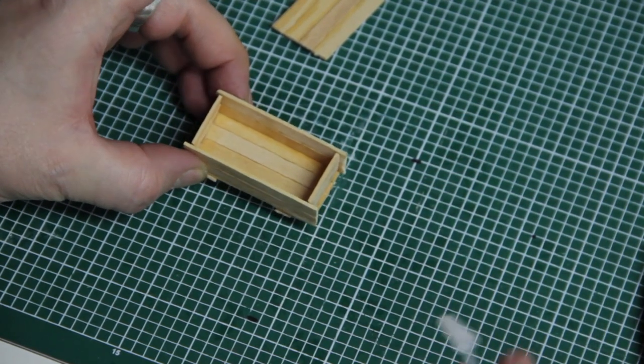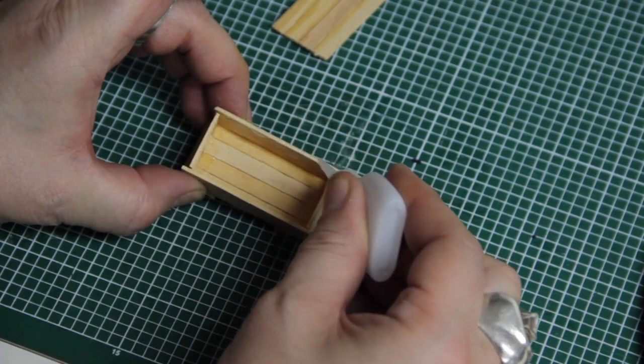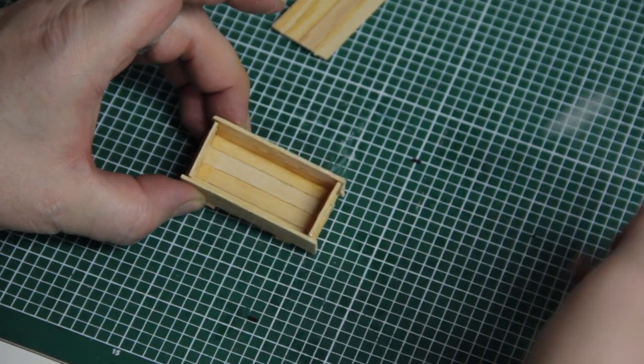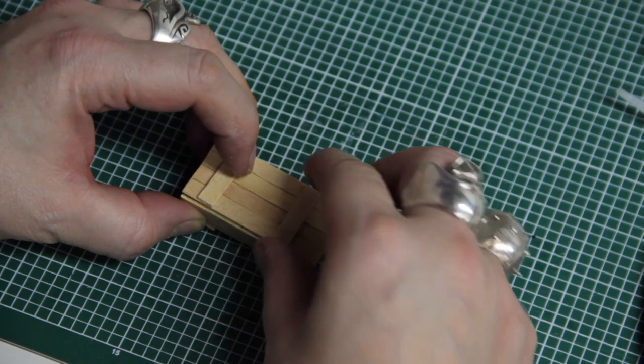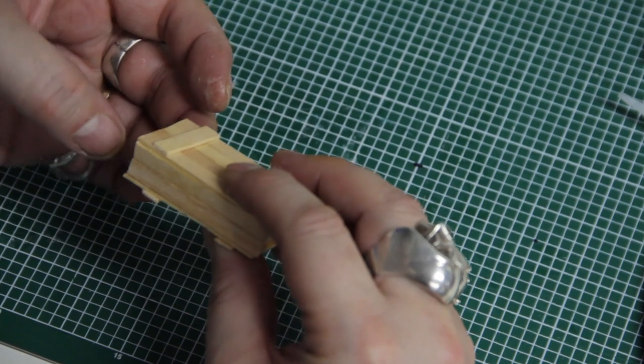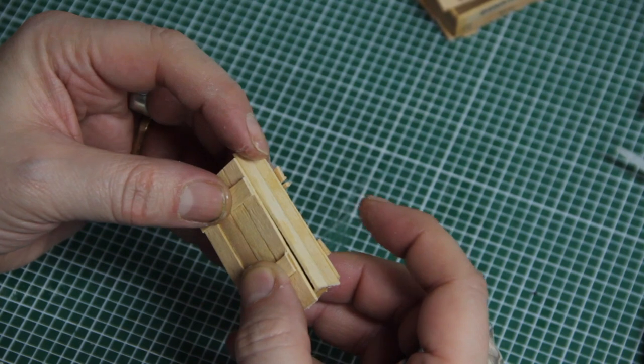Okay, so once you've got your basic crate shape together, you can put on the lid. You can put it on slightly askew. Doesn't matter, like I say, rough and ready. And there you go. One crate ready to be weathered. We'll do that in another video.